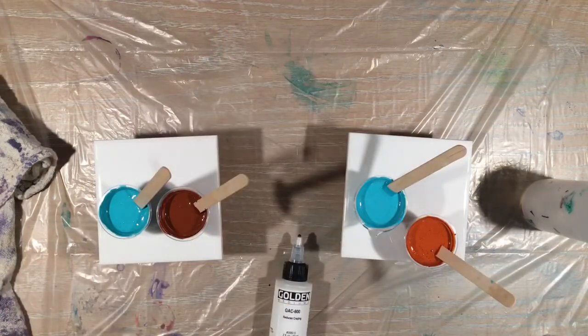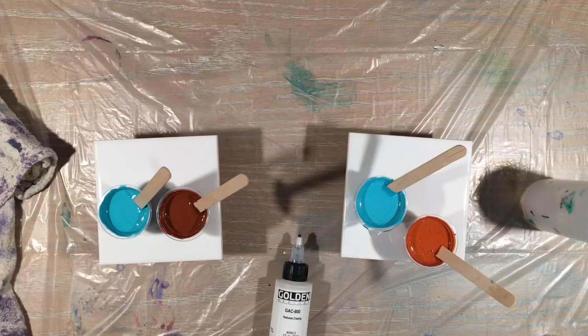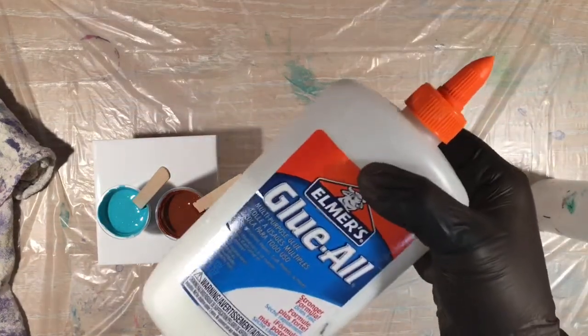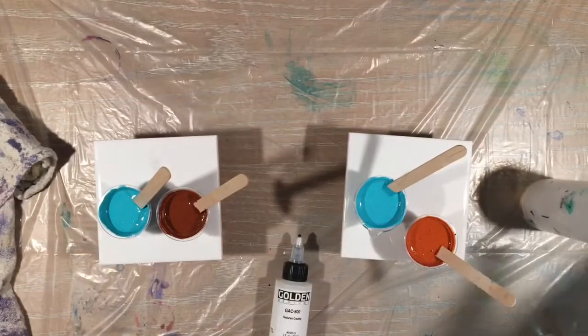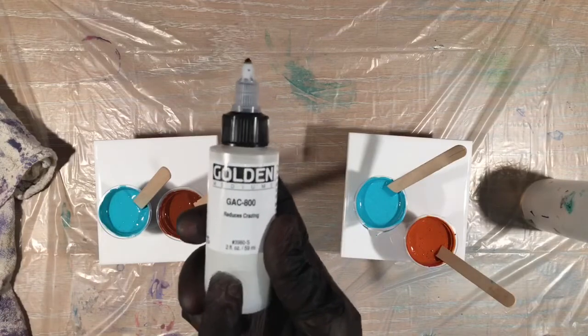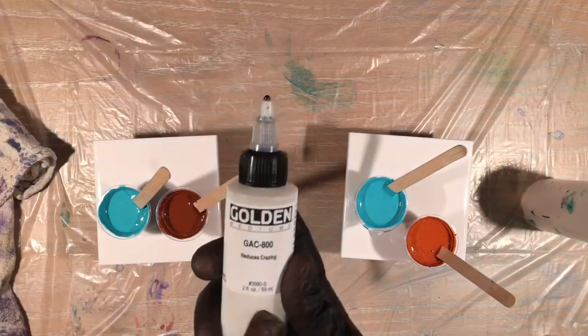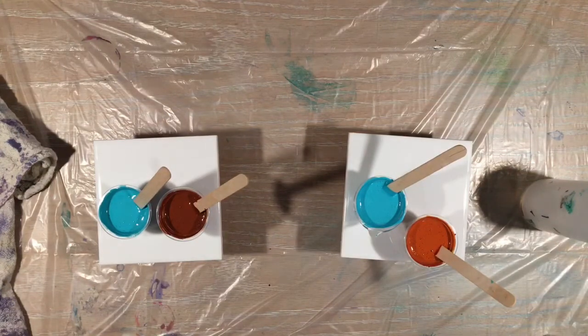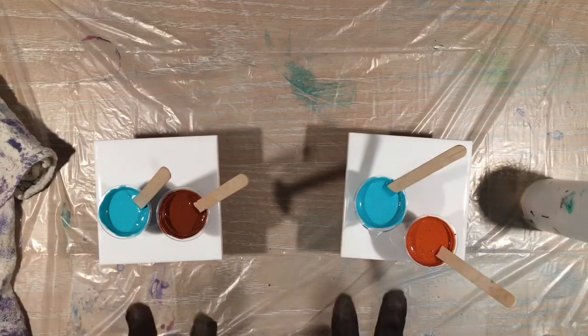So what I have done is I've done four parts Elmer's Glue-All. And then I've done two parts golden GAC 800, and one part of the paint for both of these brands.